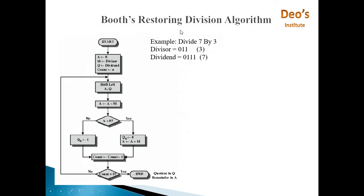We will consider this example: divide 7 by 3. Here the divisor is 3, that is 0,1,1 in binary, and the dividend is 0,1,1,1 that is 7. Here we are considering division of positive, that is unsigned integers only.